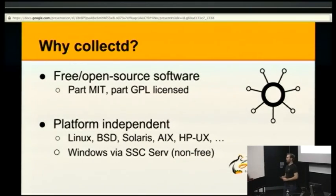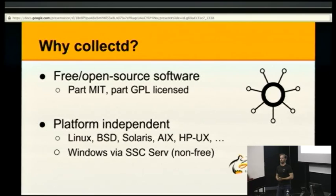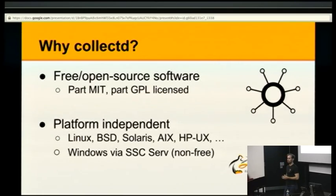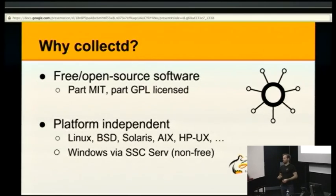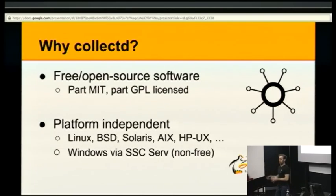You might want to use CollectD because, for one, it's a free and open source project. There are literally hundreds of people contributing to it. We started out using the GPL and eventually found that too cumbersome to integrate with some other parts of open source software, so we are slowly but steadily moving to the MIT license. It's just very tedious work contacting all the contributors. CollectD is platform independent — it runs on FreeBSD, Solaris, and every operating system with a Unix name, though it does not run on Windows.